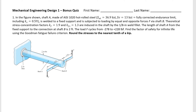In the figure shown, shaft A is made of hot rolled steel with the given properties and a fully corrected endurance limit using a Kc of 0.59, meaning pure torsion. It is welded to a fixed support and subjected to loading by equal and opposite forces F via shaft B. Theoretical stress concentration factors Kf and Kfs are induced by the 1/8 inch weld fillet. The shaft length from the fixed support to shaft B is 2 feet. The load F cycles from minus 272 to plus 228. Find the factor of safety for infinite life using the Goodman fatigue failure criterion.